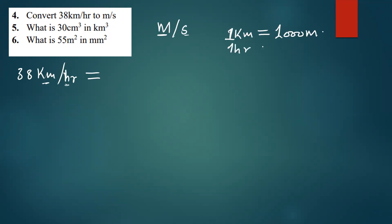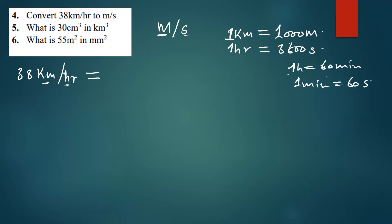We also know that one hour is equal to 3600 seconds. How do I know that? One hour is equal to 60 minutes, and one minute is equal to 60 seconds. So to convert from minutes to seconds, we multiply 60 times 60, which gives us 3600. That's the simplest way to understand that.